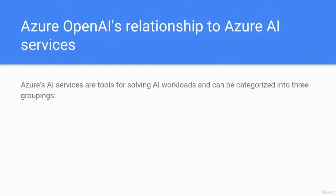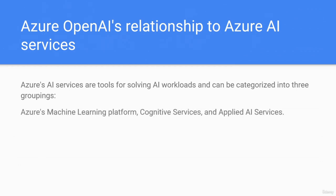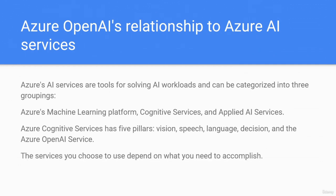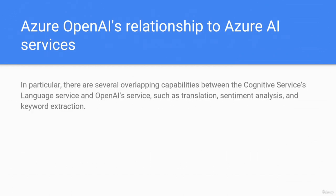Azure cognitive services has five pillars: vision, speech, language, decision, and Azure OpenAI service. The services you choose depend on what you need to accomplish. There are similar overlapping capabilities between the cognitive services language service and OpenAI service — such as translation, sentiment analysis, and keyword extraction.